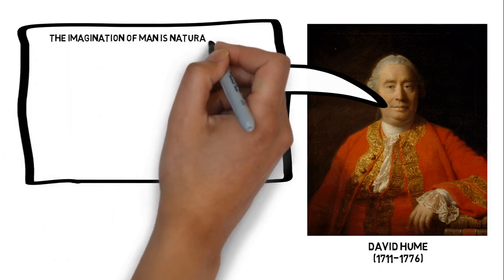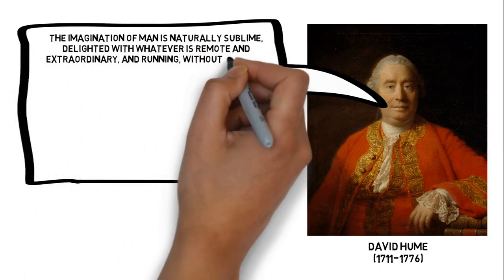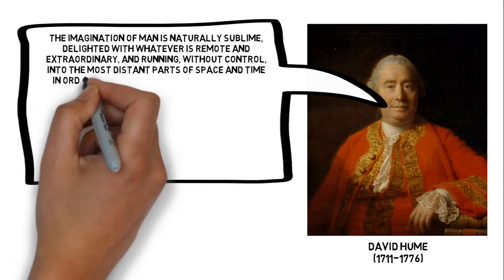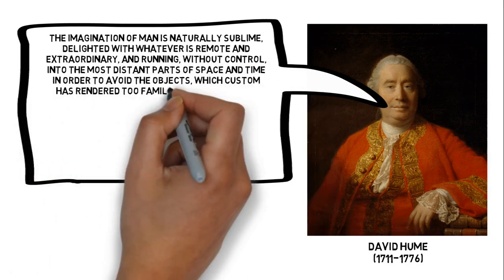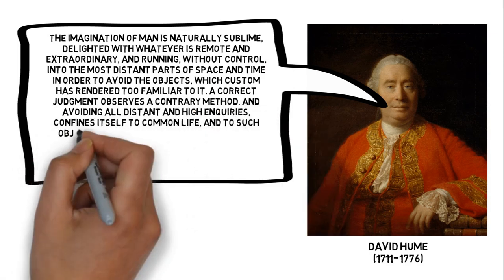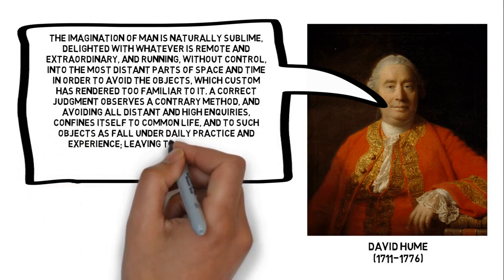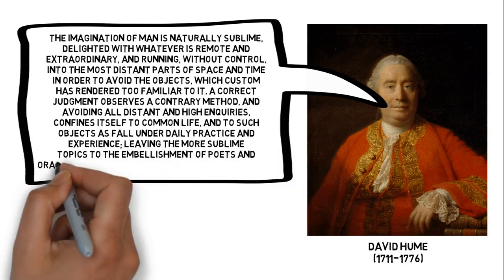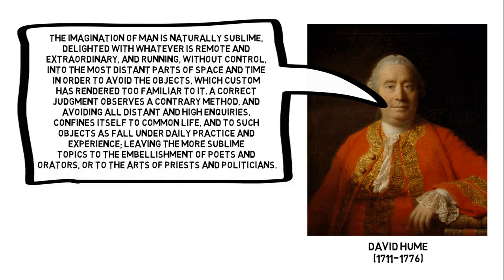Hume says, The imagination of man is naturally sublime, delighted with whatever is remote and extraordinary, and running, without control, into the most distant parts of space and time in order to avoid the objects which custom has rendered too familiar to it. A correct judgment observes a contrary method, and avoiding all distant and high inquiries confines itself to common life, and to such objects as fall under daily practice and experience, leaving the more sublime topics to the embellishment of poets and orators, or to the arts of priests and politicians.